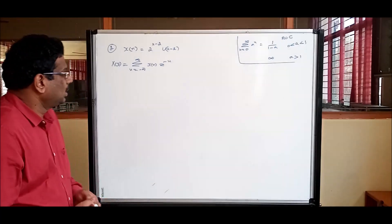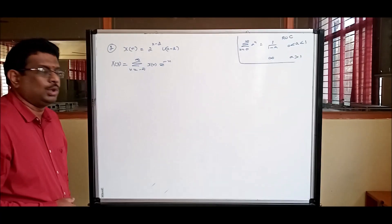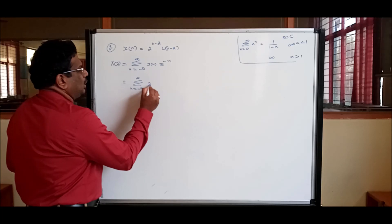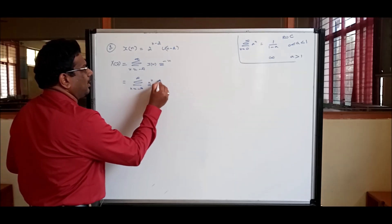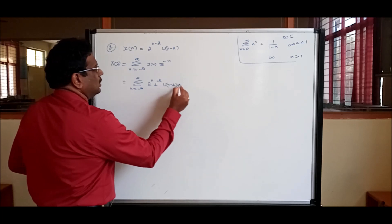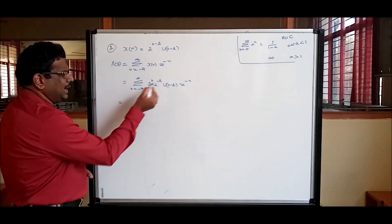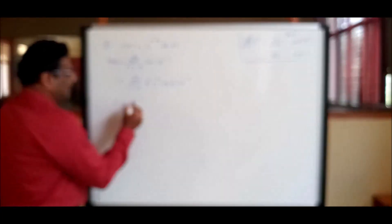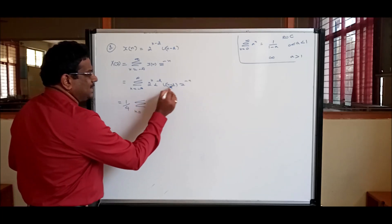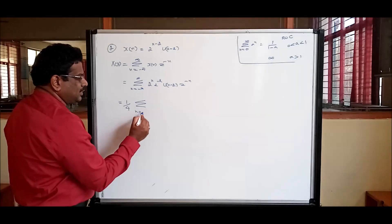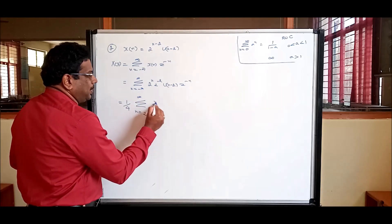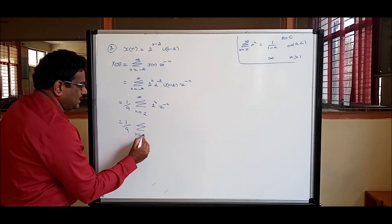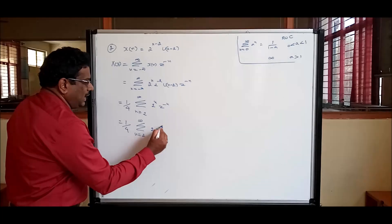The next problem: x[n] = 2^(n-2) · u[n-2]. Substituting into the Z-transform formula and breaking 2^(n-2) = 2^n · 2^(-2), we pull out the independent term. Since u[n-2] is right-shifted, the lower limit is n = 2 to ∞. This gives (1/4) · summation from n=2 to ∞ of (2z⁻¹)^n.